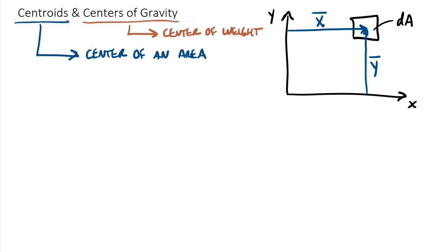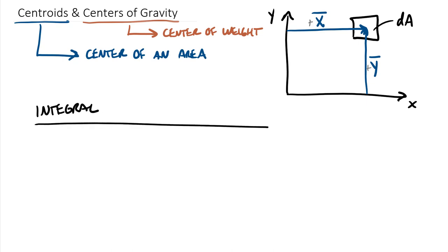Notice that these are directional vectors — it's not just a magnitude, x-bar is to the right of the y-axis and y-bar is above the x-axis. Since they line up with positive x and positive y, these would be a positive y-bar and a positive x-bar. So that defines x-bar, y-bar, and dA. We're going to write two columns of equations: integral equations and composite parts equations.